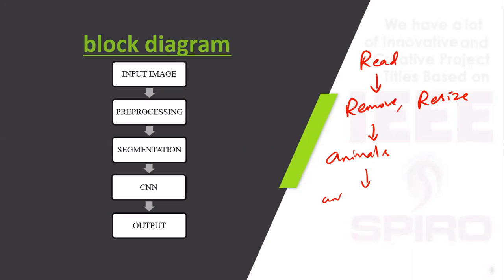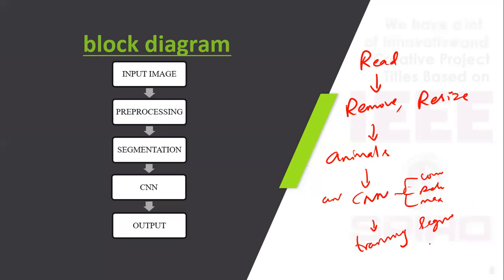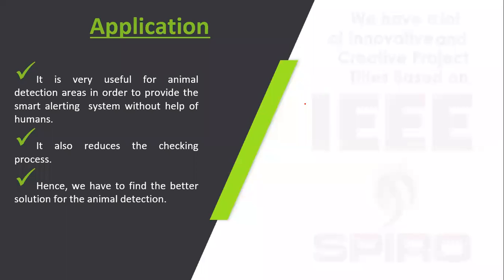After segmentation, the segmented images are trained by CNN. CNN is a set of layers. Finally, based on the training data, a model image is produced. It has many applications for smart animal detection.